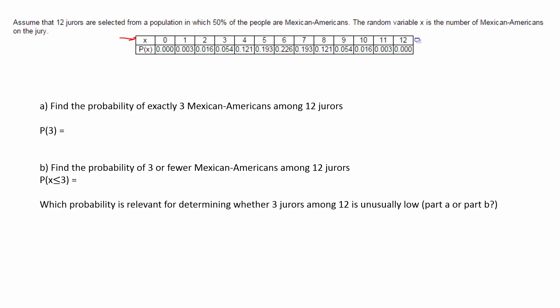It says find the probability of exactly 3. Well, that would just be that value — 0.054.